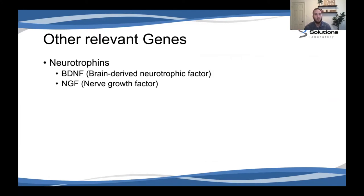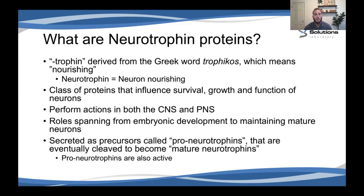Some other relevant genes I've been focusing on are proteins called neurotrophins. Two of the big ones are BDNF (brain-derived neurotrophic factor) and NGF (nerve growth factor). Neurotrophin comes from the Greek word 'trophikos,' meaning nourishing — so neurotrophin means neuron-nourishing. This is a class of proteins involved in the survival, growth, and function of neurons. They perform actions in both the CNS and peripheral nervous system, with roles spanning from embryonic development all the way to maintaining and nourishing mature neurons.